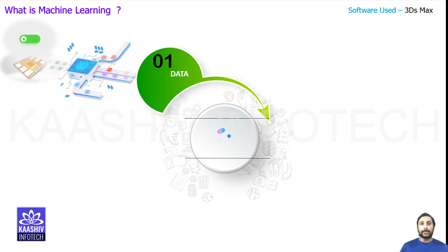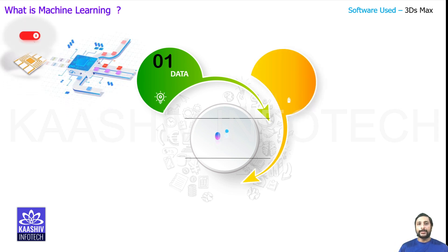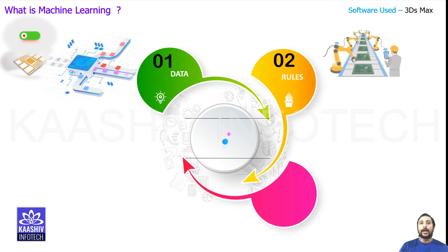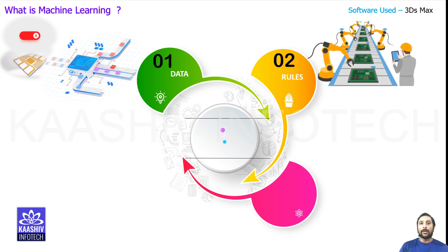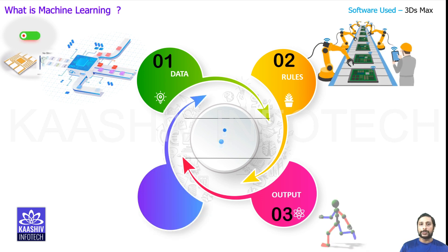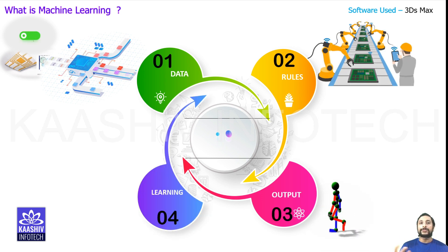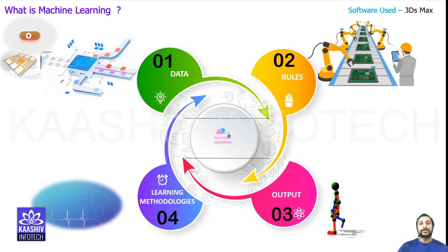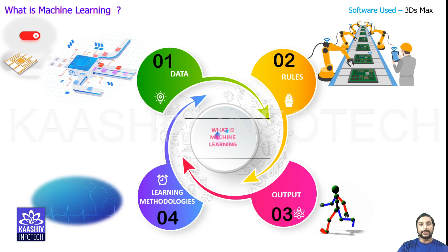For machine learning, you have the data. This data can be processed via rules and algorithms, and based on the algorithm outputs, the output can be re-modified using learning methodologies — that's your machine learning technology.